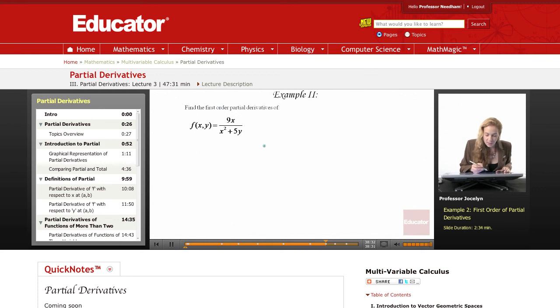Okay, our next example asks us to find the first order partial derivatives of f of x, y equals 9x over x squared plus 5y. Well, again,